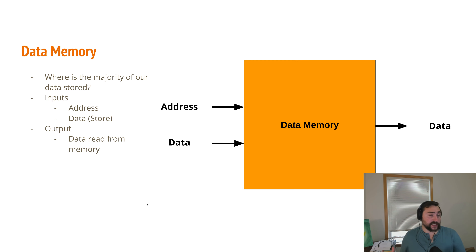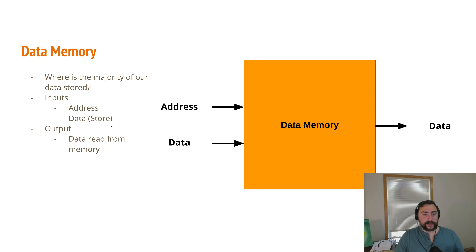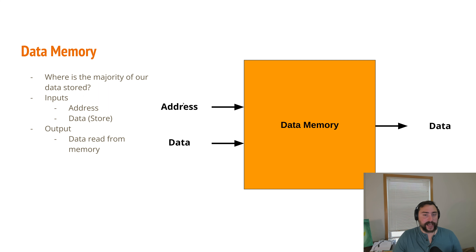Along with registers, we have this much larger piece of memory called data memory, where all of our program's other data is stored. Instruction memory holds the program instructions, and data memory holds the data we're operating on. The inputs to data memory are pretty simple: an address specifying which part of memory to access, and the actual data — this is only for a store operation. The output, in the case of a load operation, is the data read from a particular address. All these components are configured differently depending on the instruction being executed.